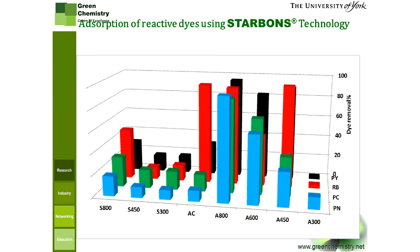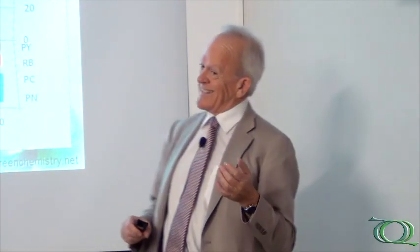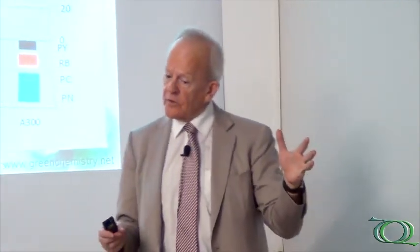Star bonds are really good at absorbing these very big molecules — six, seven, eight, nine rings, huge molecules. Something like activated carbon will only absorb one of them well; the rest it only absorbs a little. Most ordinary star bonds are not very good, but this type of star bond in particular — where 'A' stands for alginic acid, which is seaweed — is very effective. So in fact we are using natural polysaccharide from seaweed to make these star bond materials.